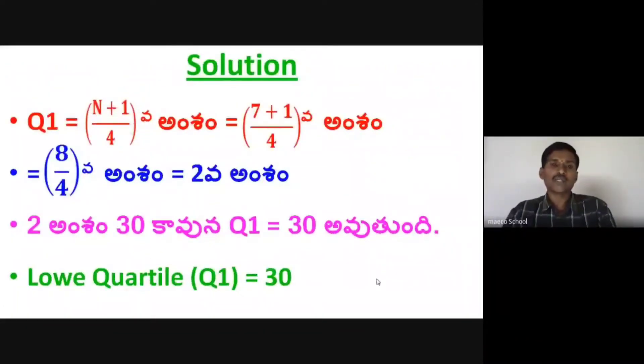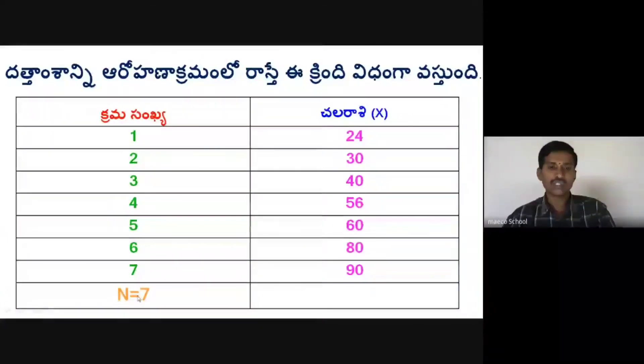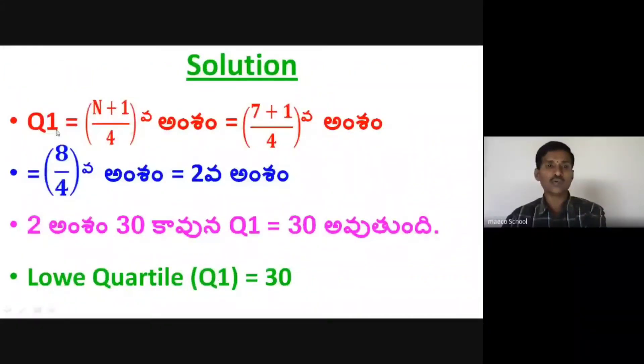First, we should calculate Q1. The formula to obtain Q1 is the size of N plus 1 by 4 item. Here, N is 7. The formula is N plus 1 by 4th item, so that's 7 plus 1 by 4th item.